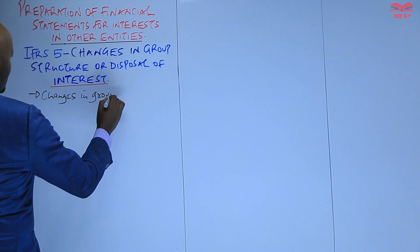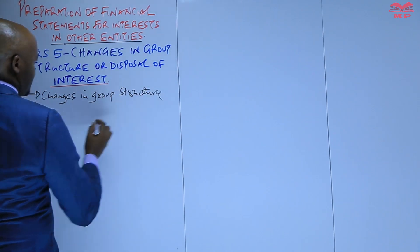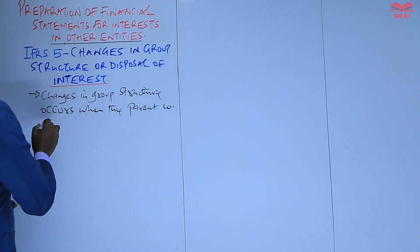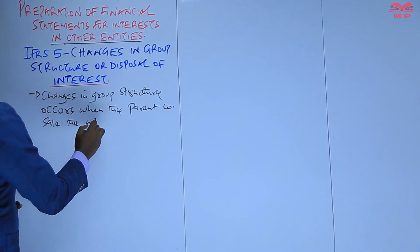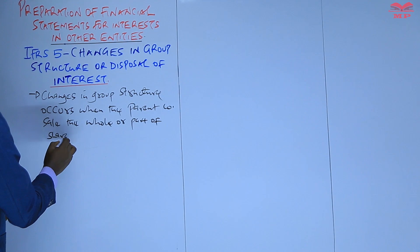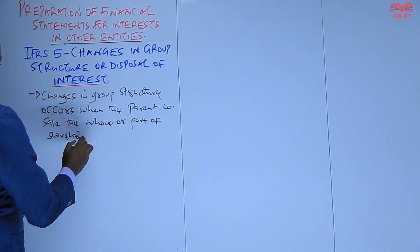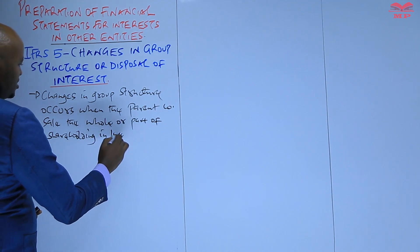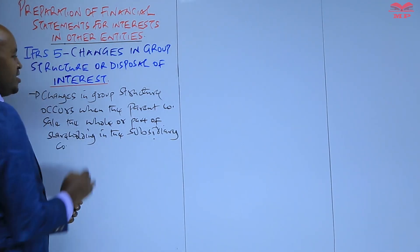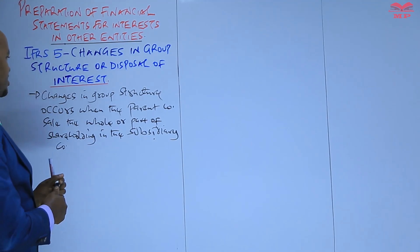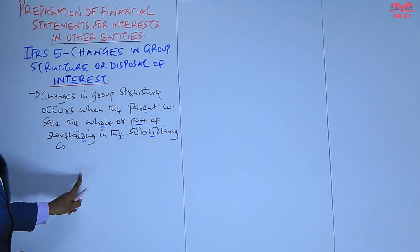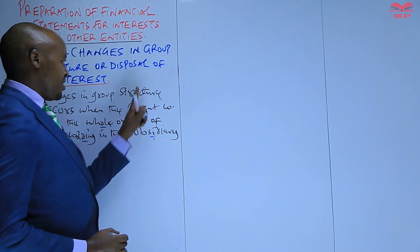Changes in group structure occur when the parent company sells the whole or part of a shareholding in a subsidiary company. Basically, that is what we refer to as the disposal of interest — the parent company will sell some of the shares, or basically all the shares, which are held in a subsidiary company.